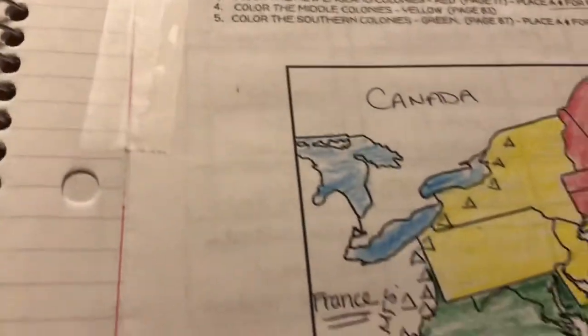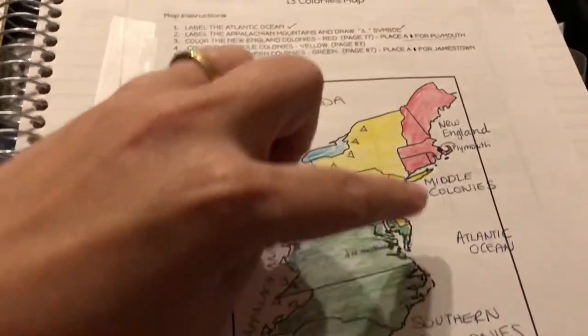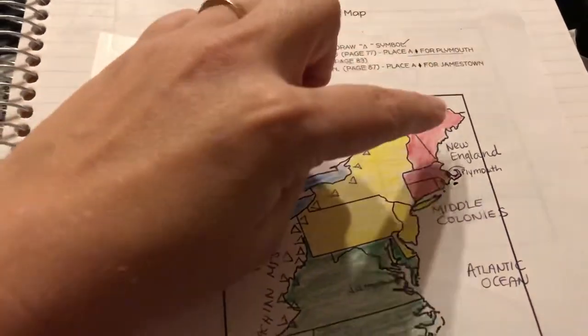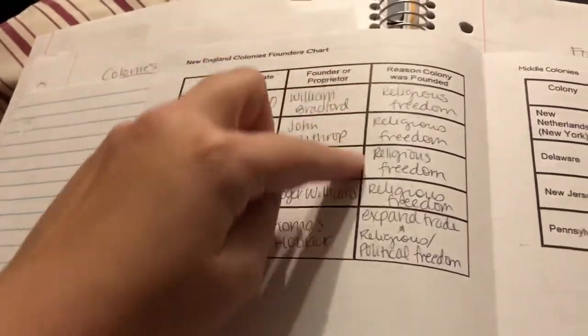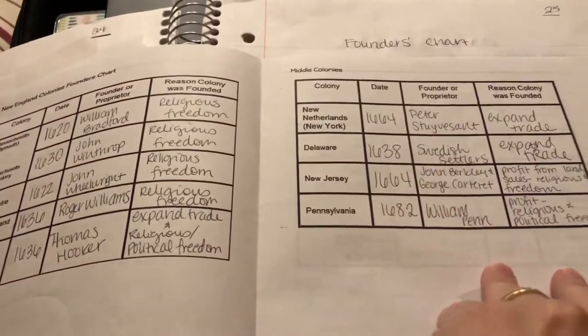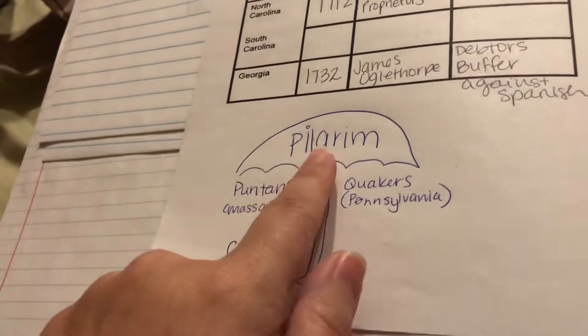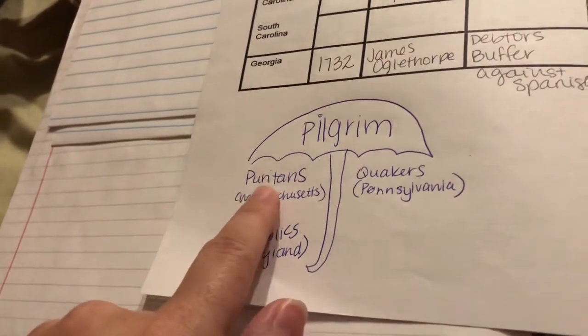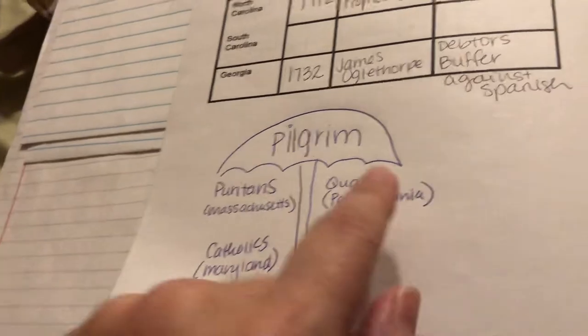In our founders chart we have a map that looks at the different regions: southern, middle, and New England. You need to know New England, middle, and southern, and it has all the regions — why they were founded, who founded them, what year they were founded. An important umbrella note on the back: Puritan groups — Puritans were in Massachusetts, Catholics in Maryland, Quakers in Pennsylvania.